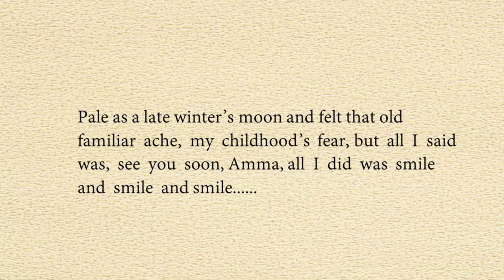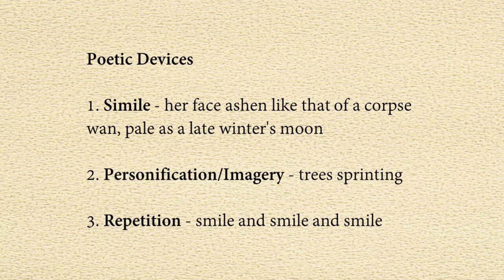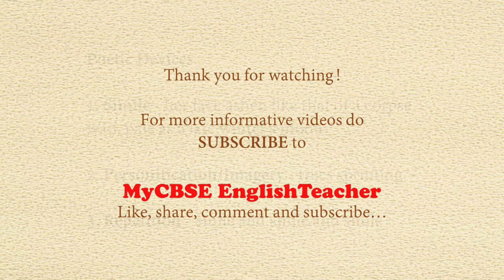Now let's look at the poetic devices used in the poem. The first is simile: 'Her face ashen like that of a corpse' and 'pale as a late winter's moon' — the mother is compared twice. The second is personification and imagery: 'trees sprinting' gives trees a human quality and also creates a vivid image. The third is repetition: 'smile and smile and smile' — the word smile is repeated for emphasis. I hope you liked today's video. Do subscribe to CBSE English Teacher, like, share, and give your valuable comments below.